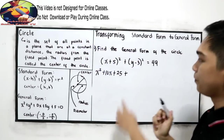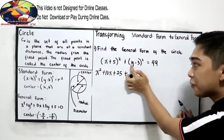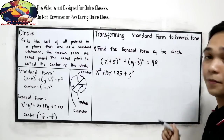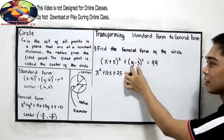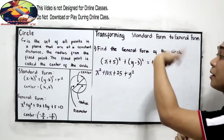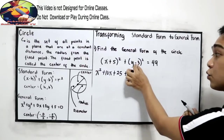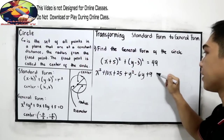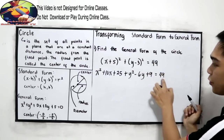Copy the plus sign. Now square the first term — that is y squared. Multiply the first and the second term: that is negative 3y, times 2, giving negative 6y. And square the second term — positive 9 — is equal to 49. Just copy 49.